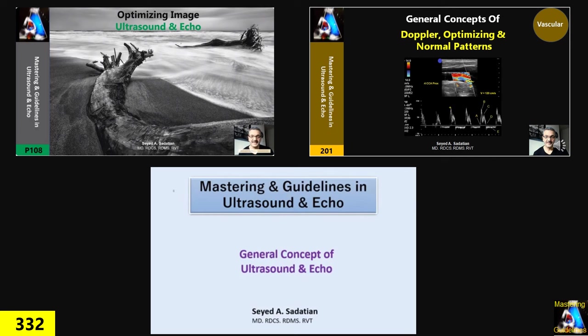Since we have different machines and they have a little difference, I prepared different groups for each machine. For each machine, we will have different clips for any modality. One of them is for 2D, color, M-mode, and all Doppler. Another will be allocated for strain, another for TEE, and another for 3D.